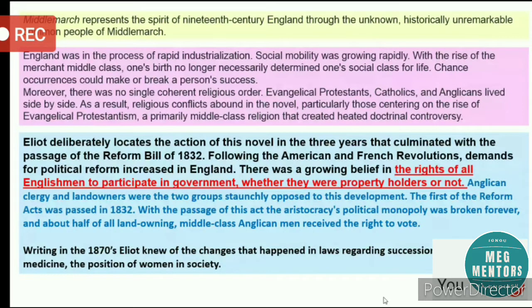Writing in the 1870s, Eliot knew of the changes that had happened in laws regarding succession, the evolution of medicine, and the position of women in society. She was writing this novel about 40 years after all these things had happened, and could look back and study what changes had occurred. She understood how medicine had evolved, how laws had changed, and how the position of women in society had shifted — and wanted to portray all of it in a novel.